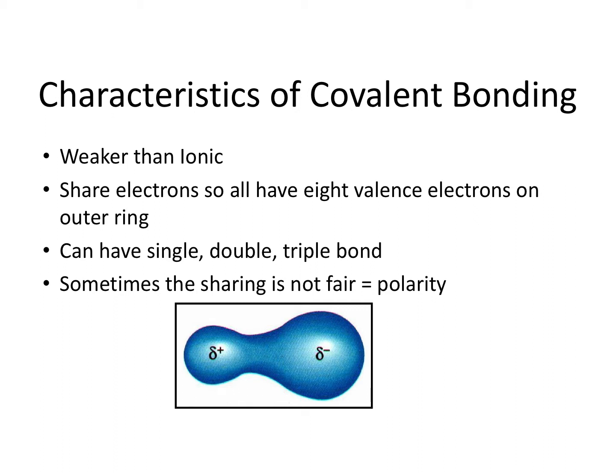Some characteristics of covalent bonding: they are generally weaker than ionic because there is a sharing going on and it is a weaker bond. They're going to share enough until they have that full outer shell, or meet the octet rule, which is eight valence electrons for most of them. We know hydrogen and helium are the exception with two. Helium's not taking part in any bonding right now, so we don't have to worry about that. With covalent bonding, we have single, double, and triple bonds.